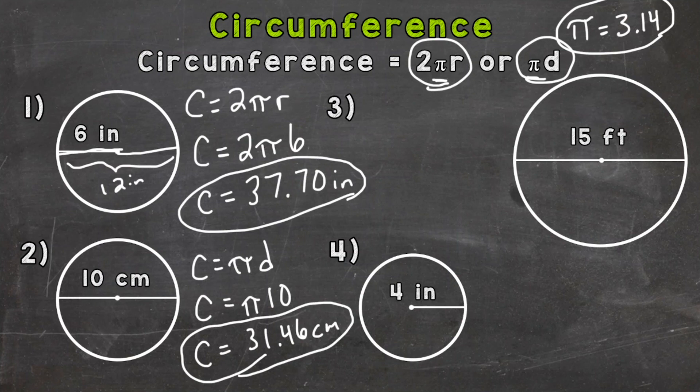Number three, we are given the diameter, so let's use circumference equals pi d, or pi times diameter. We'll plug in the diameter, so pi times 15. Then calculate, and we get an answer of 47.12, and this is feet.